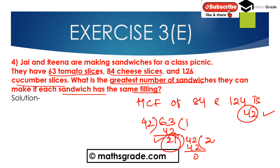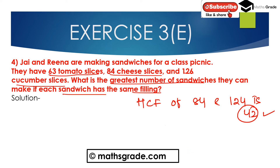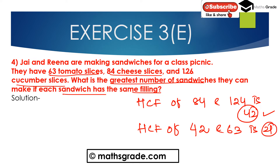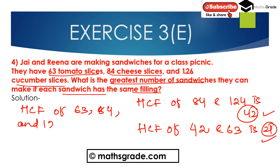The Highest Common Factor of 42 and 63 is 21. So the Highest Common Factor of 63, 84, and 126 is 21. Therefore, the greatest number of sandwiches they can make, if each sandwich has the same filling, is 21.